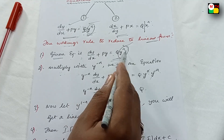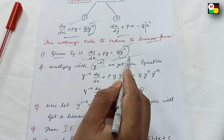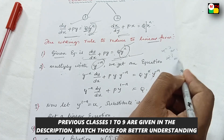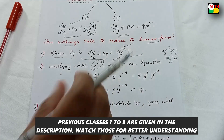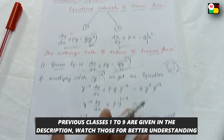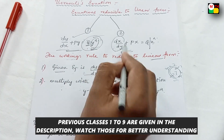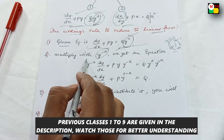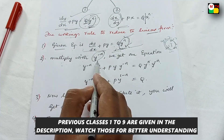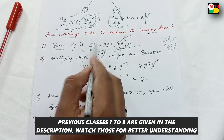Inverse y power n — reverse into y power minus n. So y power minus n, multiply. x minus 2 is x squared, x minus 3 is x cubed. But this is the first model, second model: dy/dx is the first model, dx/dy is the second model. So multiply with y power minus n.